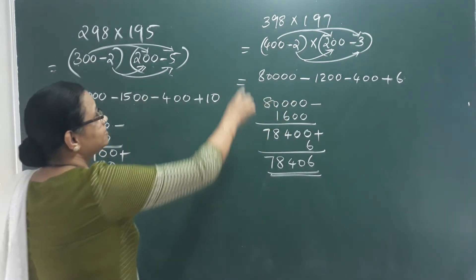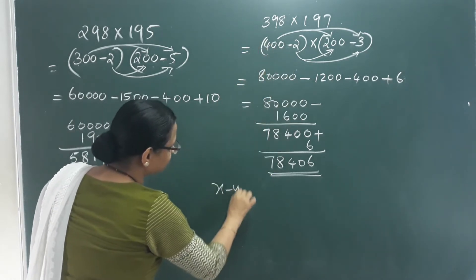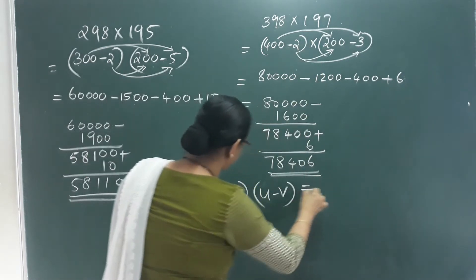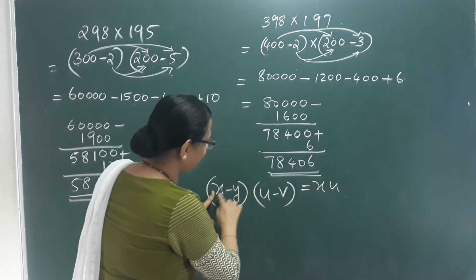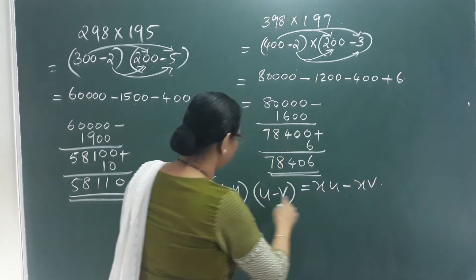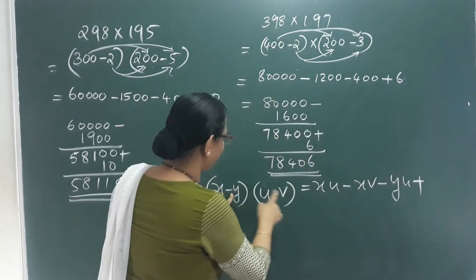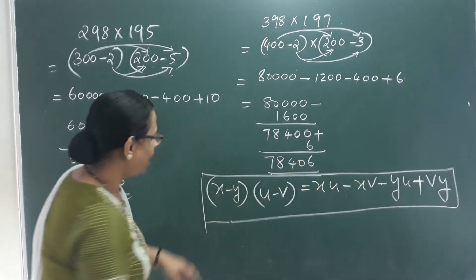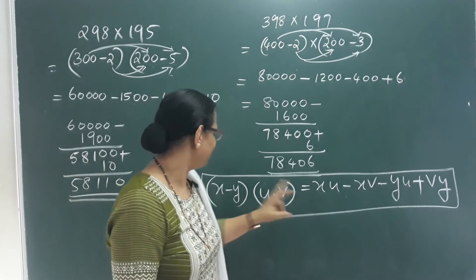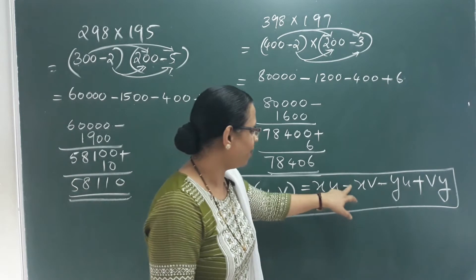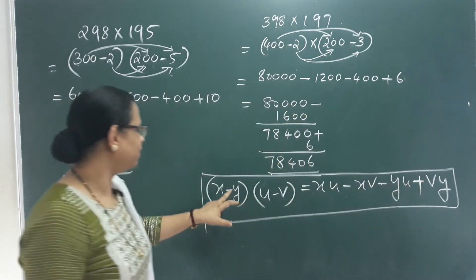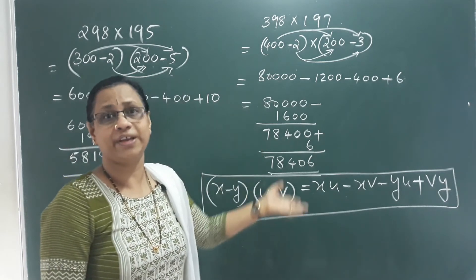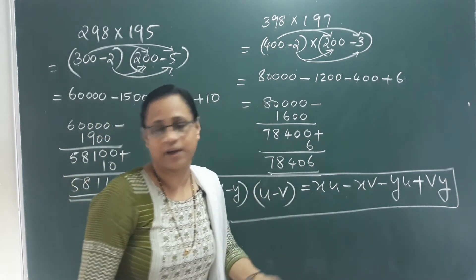How do we represent this algebraically? Here x minus y, and here u minus v. So x into u is xu, x into negative v is minus xv, negative y into u is minus yu, and negative y into negative v is plus yv. So x minus y into u minus v equals xu minus xv minus yu plus yv. We can also do this geometrically.